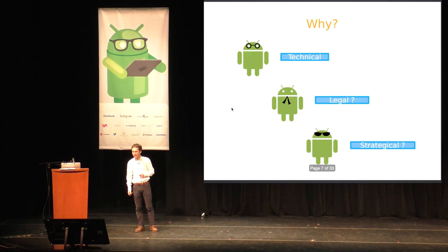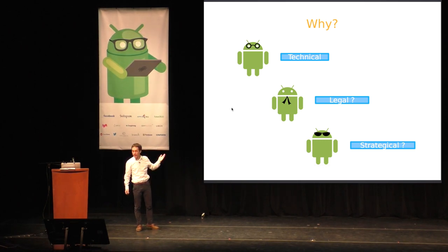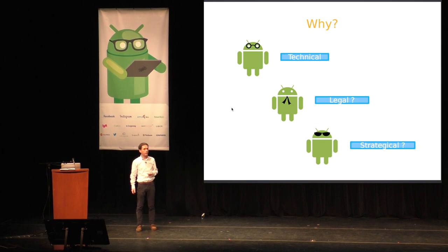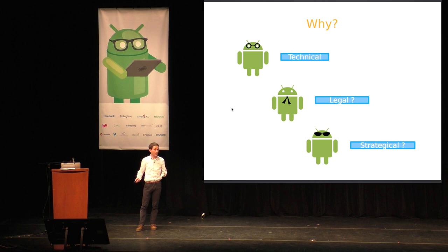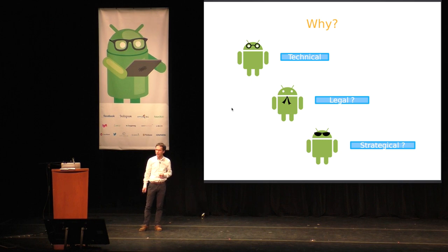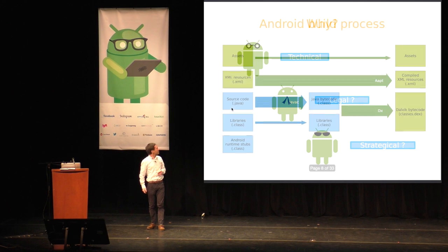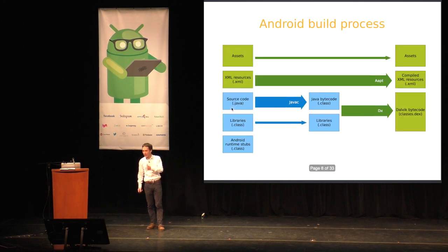Why would Google switch to a new compiler? There might be many reasons. There are technical reasons, which are the most important ones I'll focus on today. There might also be some legal reasons — the licensing for instance of the various components of the Android SDK. Google typically uses Apache; other tools might have different licenses. There might also be strategic reasons in the tug of war between Oracle and Google — I'll leave that to your imagination.